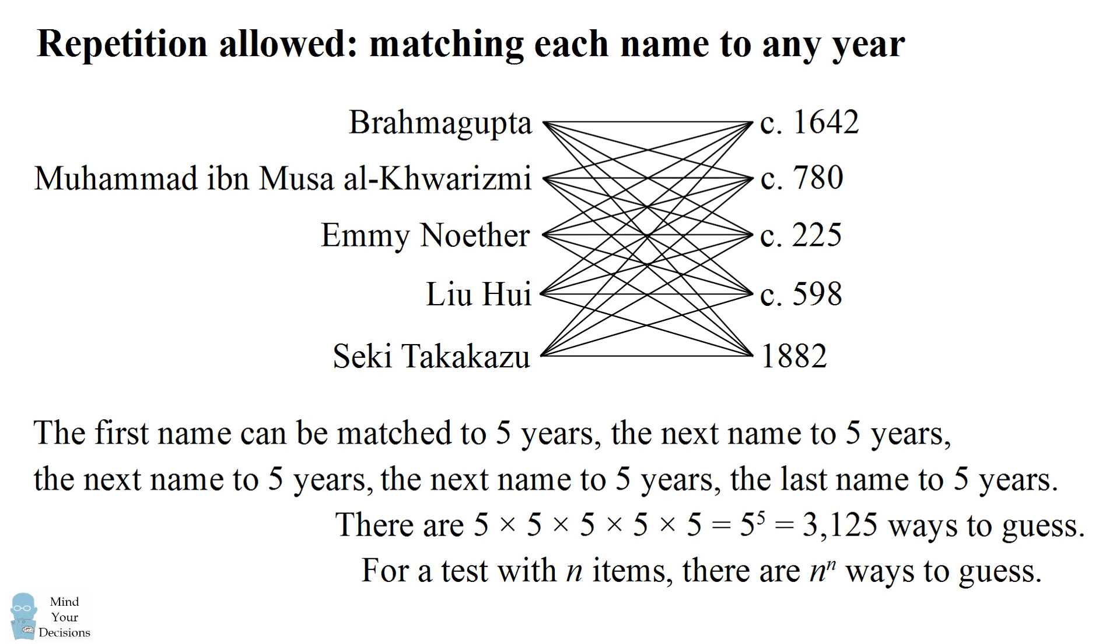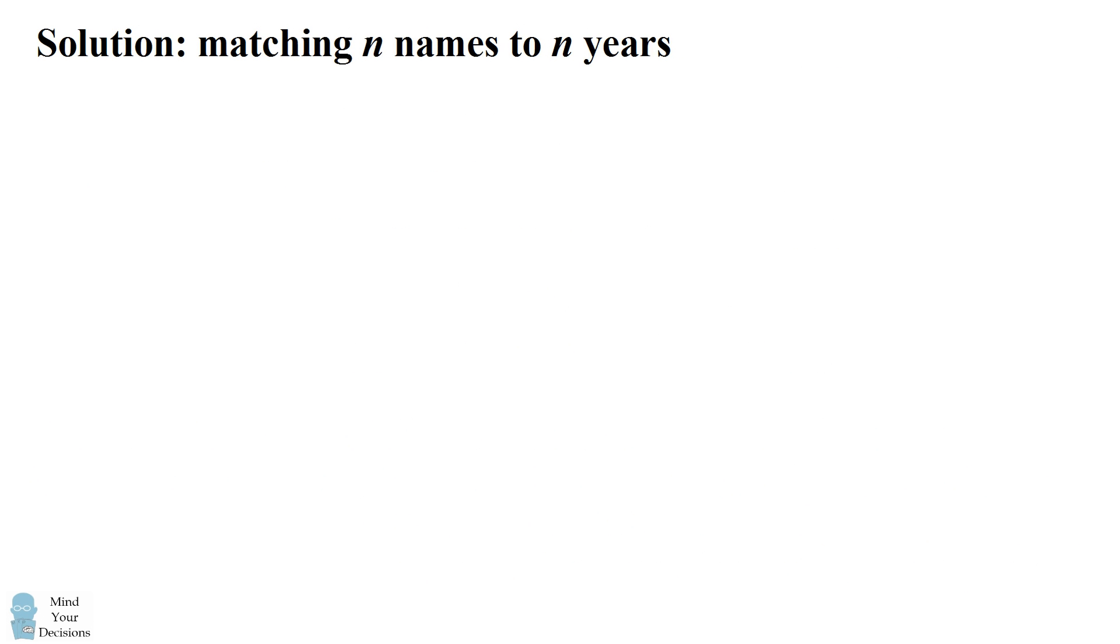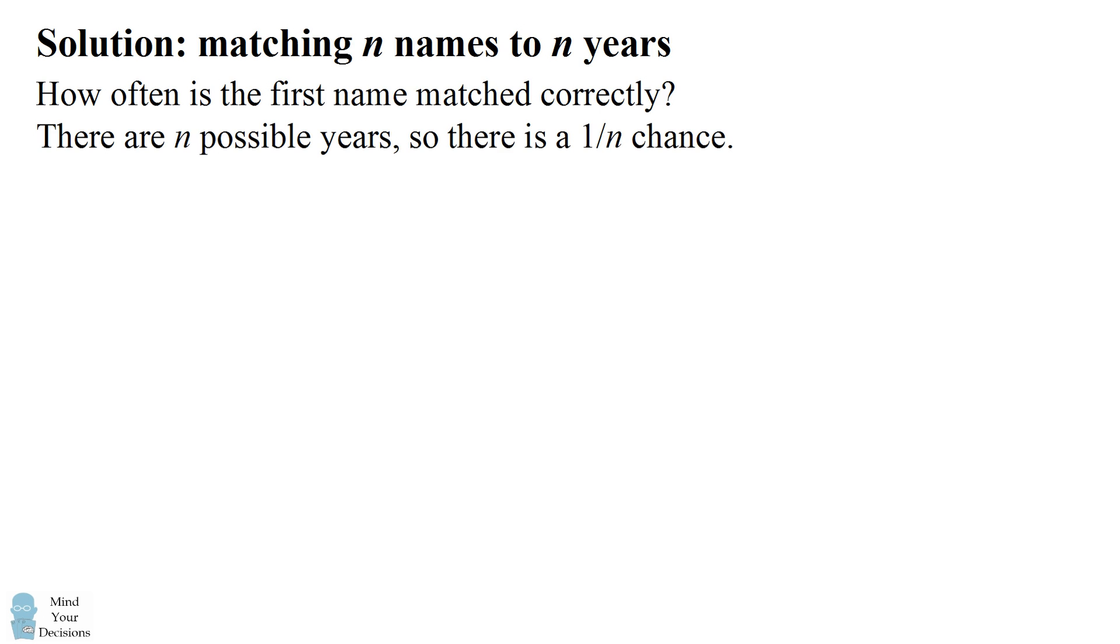So even if you could compute this on a computer algorithm, you wouldn't want to do it when n gets very large. So how are we going to solve this problem? We're going to consider a probability principle. So let's start out by asking, how often is the first name matched to the correct year? Well, think about it. There are n possible years. So on average, there is going to be a 1 in n chance that you match that first name to the correct year.